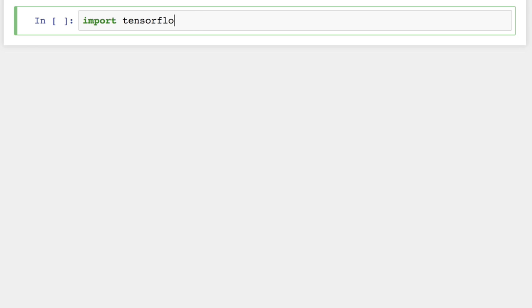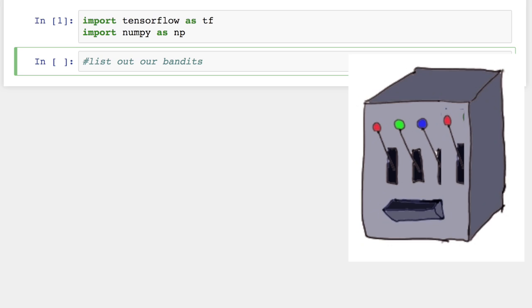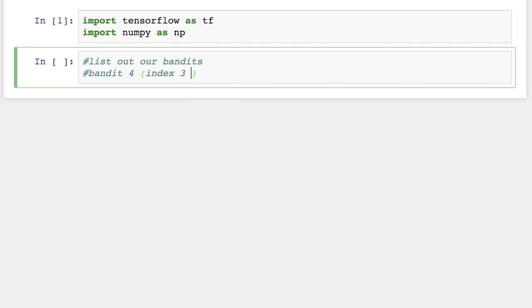So let's start initializing some values. After importing TensorFlow and NumPy, the only two libraries we'll need to use, we can define our bandits. We'll be using a four-armed bandit, that is one slot machine with four levers, and we can refer to each arm as a bandit.